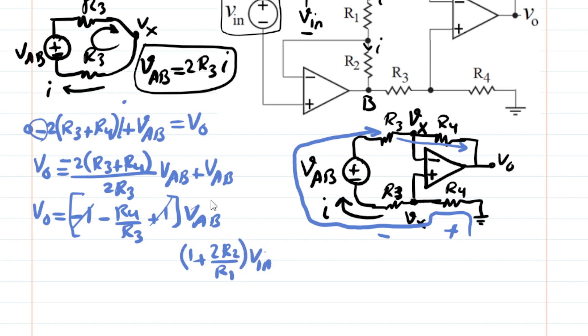And then inside this parentheses, what remains is negative R4 divided by R3. And that's equal to V out. Finally, we got it.